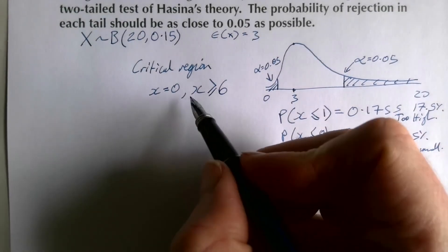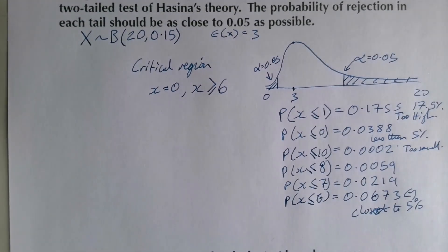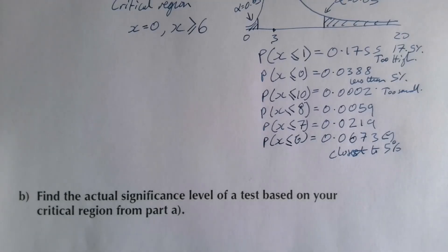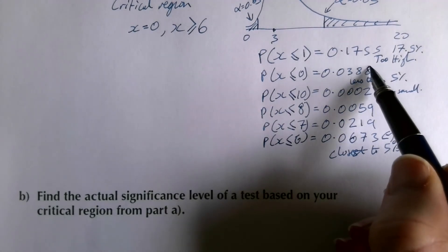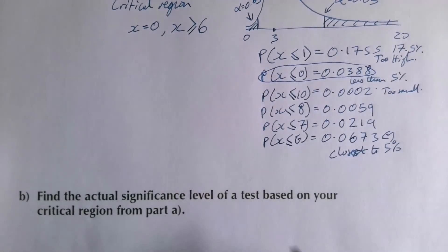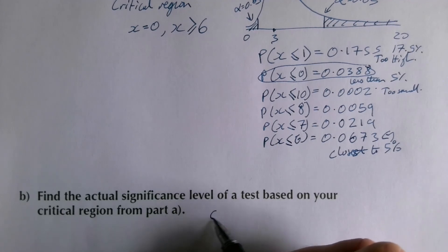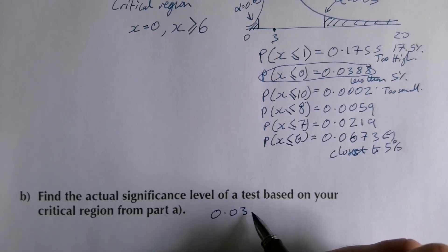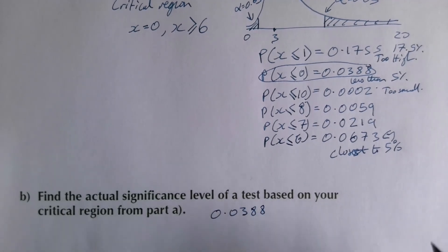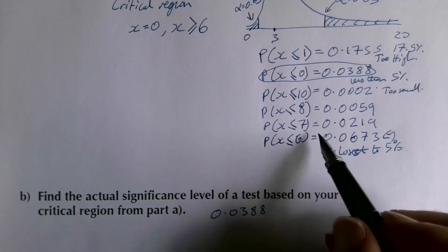The critical region is x = 0 or x ≥ 6. The next part asks for the actual significance level based on this critical region. This means adding together the probabilities at each end: 0.0388 and 0.0673.